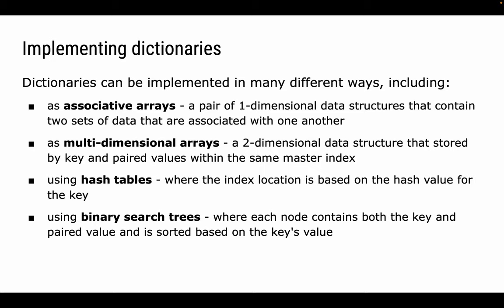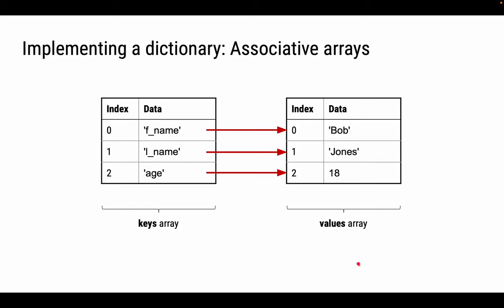So when we do associative arrays, you need two arrays, one for storing the keys, one for storing the values. And the fundamental principle is that we keep the array indexes in sync. So whatever is stored in index 0 in the keys array, its paired value will be in index 0 in the values array. So if we've got fName, lName and age as our keys, then in the same associated location in the values array, you will find the values Bob, Jones and 18, which are the paired values for each of those keys.